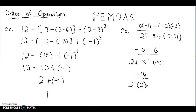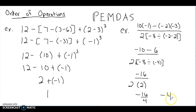We still have to finish the denominator: 2 times 2 gives us 4. On the numerator, negative 10 minus 6 gives us negative 16. We've simplified the top to negative 16 and the bottom to 4. Now all we have left is to divide: negative 16 divided by 4 is negative 4.